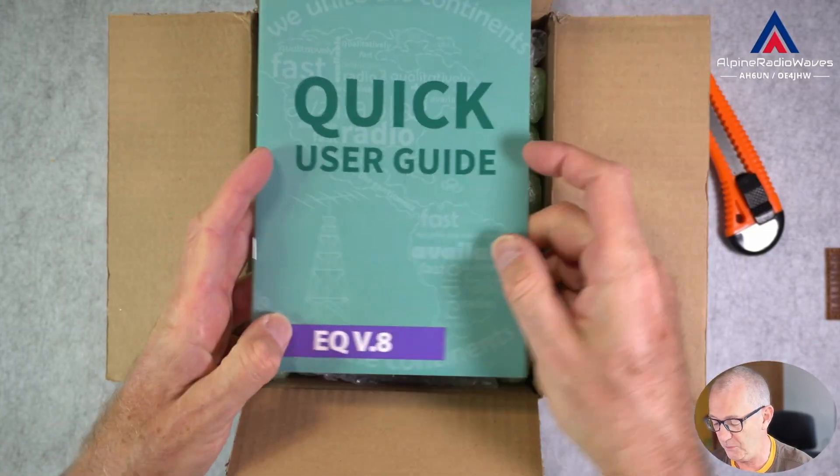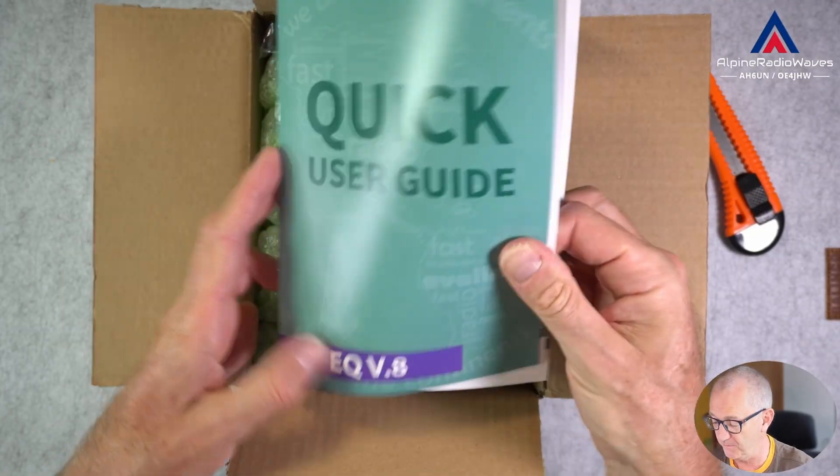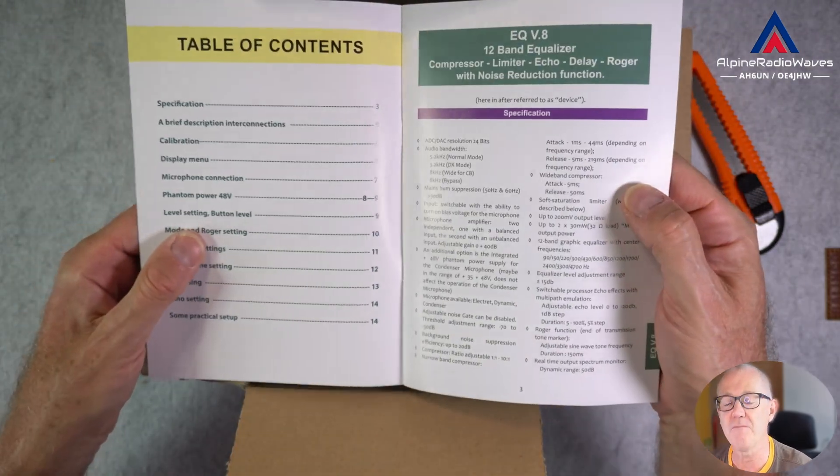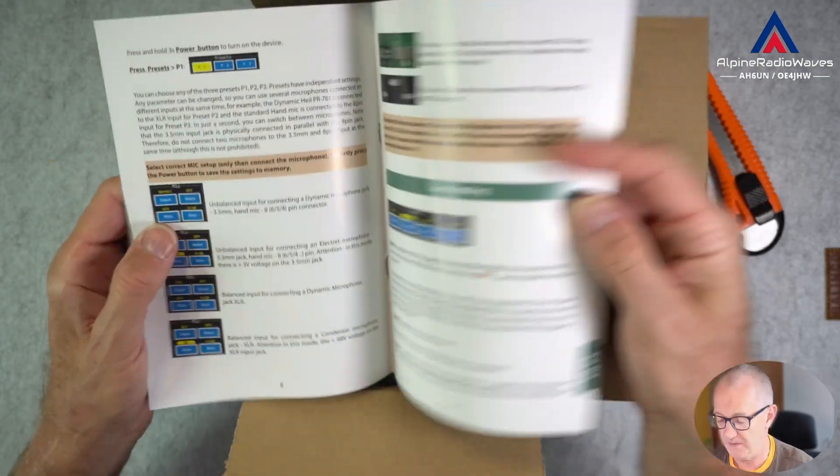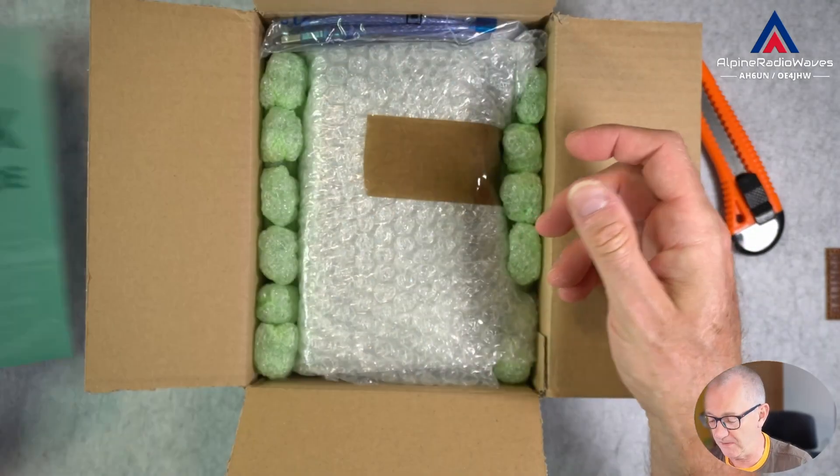It's the equalizer version V8. The 12-band equalizer. We will have a look at this user guide a little bit later on.